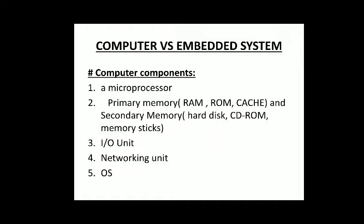Let's compare computer versus embedded systems. The components of a computer system include a microprocessor, primary memory, secondary memory, input/output unit, networking unit, and operating system. Primary memory includes RAM, ROM, and cache memory, while secondary memory includes hard disk, CD-ROM, and memory cards.